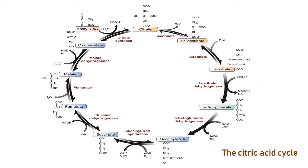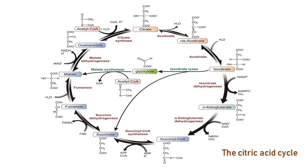Isocitrate lyase is an enzyme in the glyoxylate cycle that catalyzes the cleavage of isocitrate to succinate and glyoxylate. Together with malate synthase, it bypasses the two decarboxylation steps of the tricarboxylic acid cycle, and is used by bacteria, fungi, and plants.